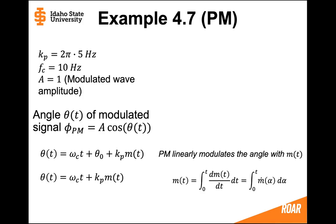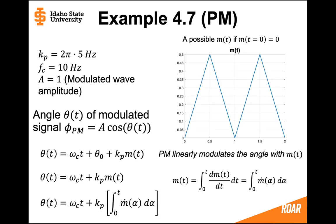Since we don't know what the message is — only its derivative — we would need to integrate the derivative of the message in order to find the message. So for this case, finding the angle theta(t) requires taking the integral. If we integrate the derivative of the message, we get a triangle wave as one possible message, assuming the message at time equals zero is equal to zero.